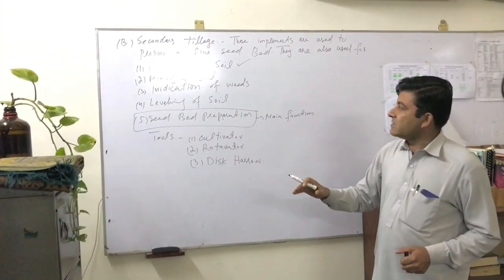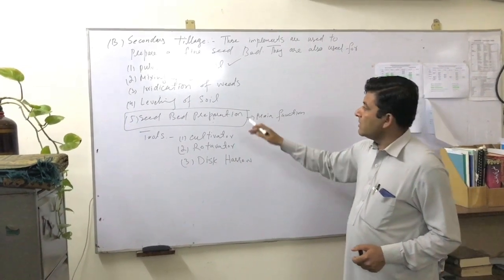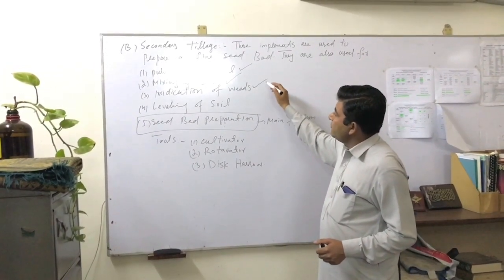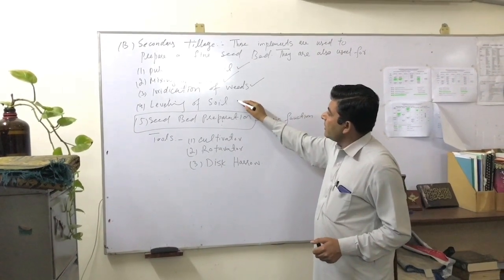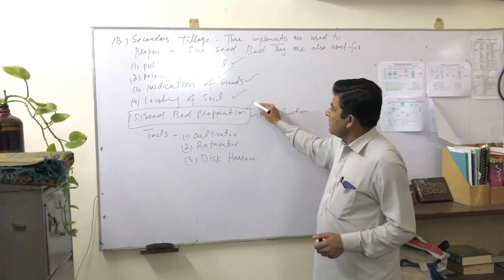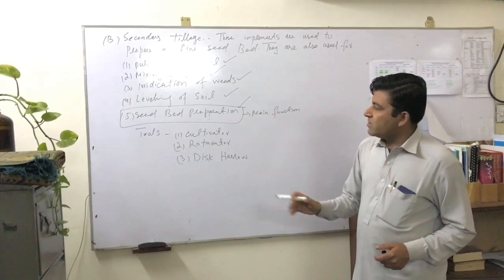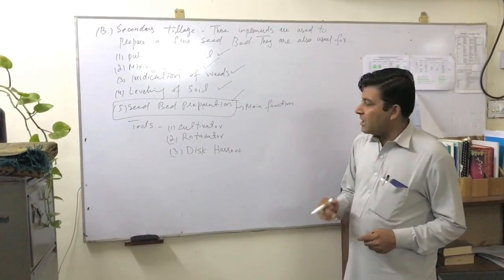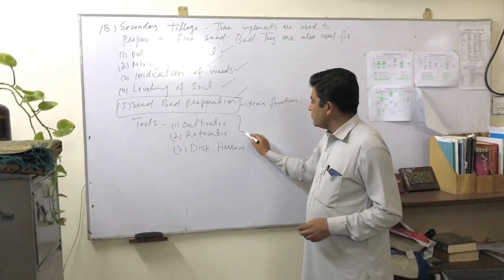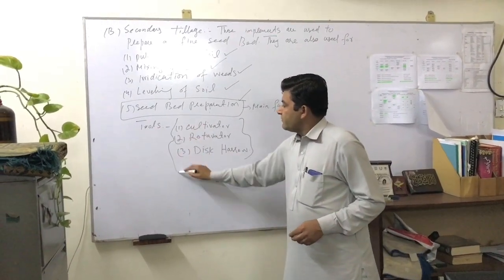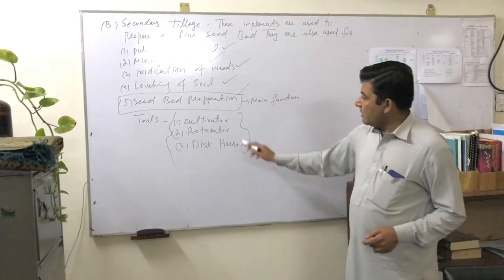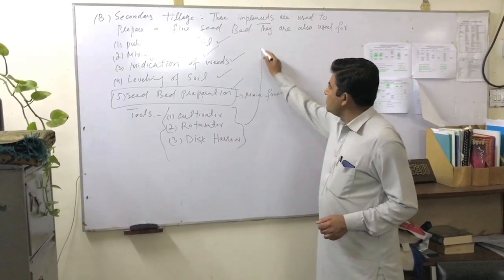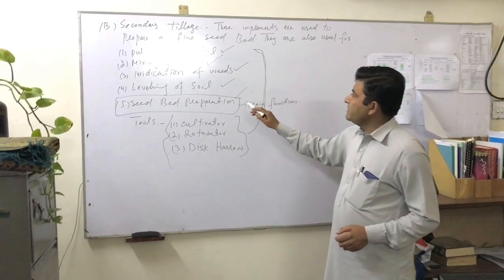These functions are called pulverization of soil. The functions include: mixing of soil, eradication of weeds, leveling of soil, and seed bed preparation. For secondary tillage, we use three tools: cultivator, rotavator, and disc harrow. These five functions are performed.